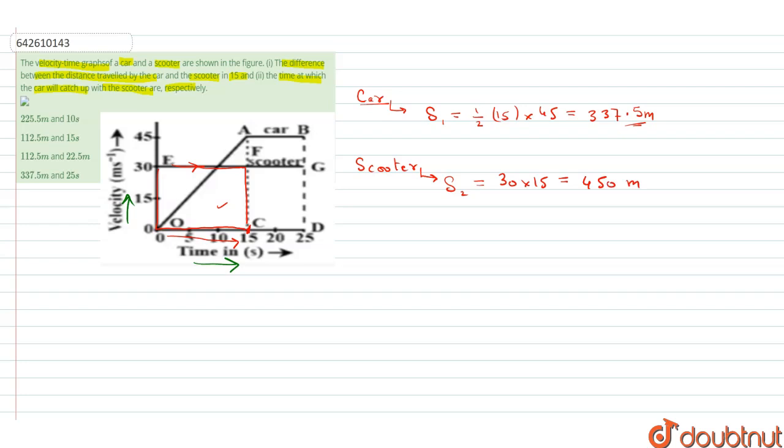Now the question is asking about the difference of the distance traveled by car and scooter. So it will be S₂ minus S₁, which equals 450 minus 337.5, which equals 112.5 meters. This is the difference and the first result. We can see this result in two options.